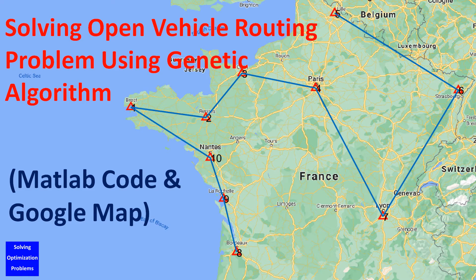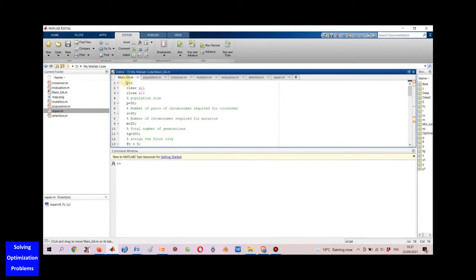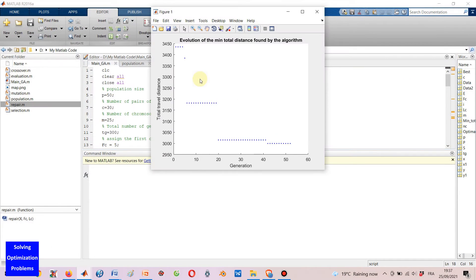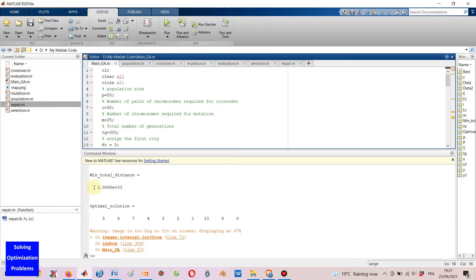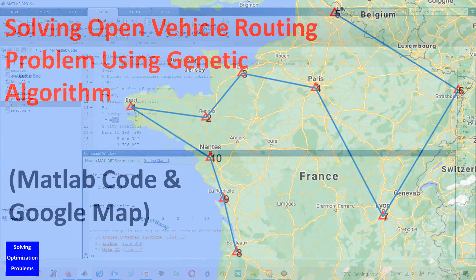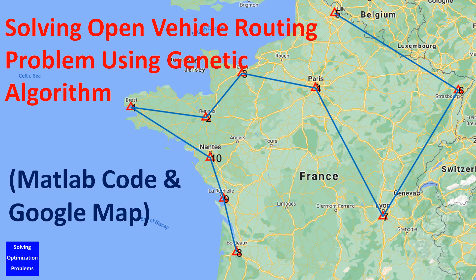Hello everyone! Let's see how it works. In this video, I'm going to show you how to solve an open vehicle routing problem using a genetic algorithm. This genetic algorithm is coded in MATLAB and Google Maps is used to visualize the optimal solution.